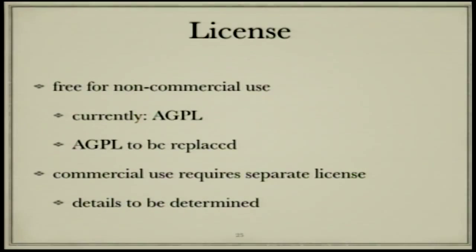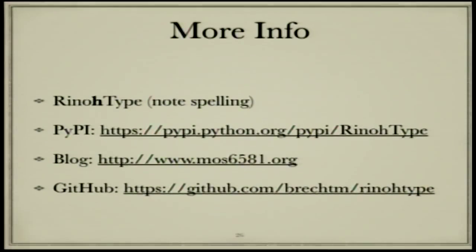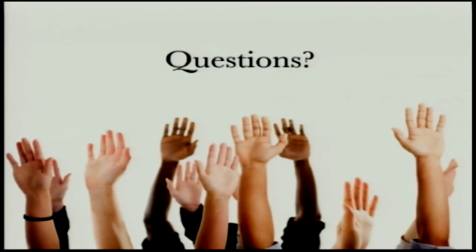I should mention the license: my intention is to keep RhinoType free for non-commercial use, so open source projects can use it to generate documentation. I'm thinking about offering a separate license for commercial use but have to determine the details. For more information, please note the spelling of RhinoType — it helps to know that it spells Python backwards. Please look at the URLs for more information and downloads.